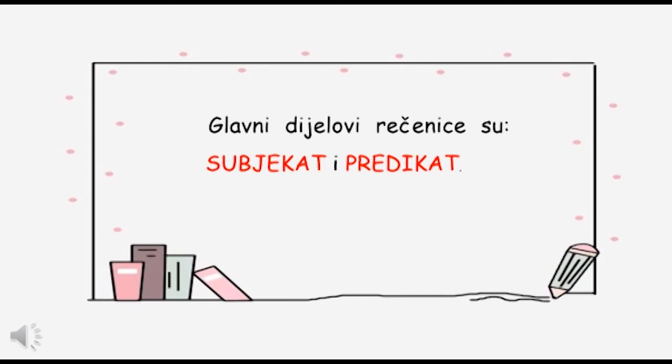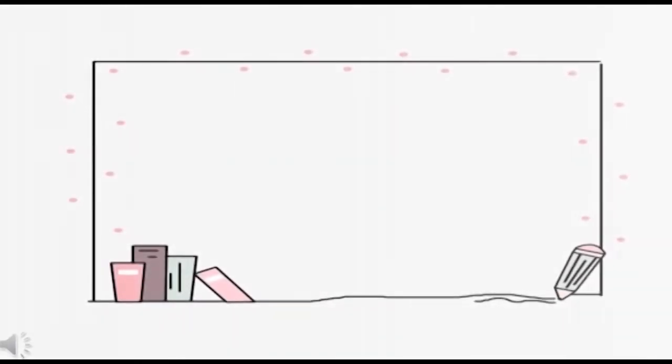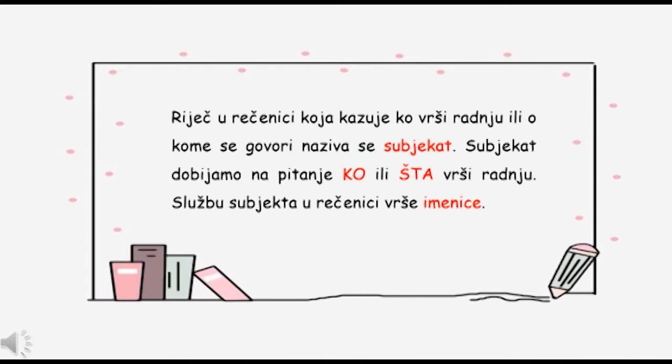Te glavne dijelove rečenice, kao što ste vidjeli u prethodnim primjerima, određujemo pomoću pitanja ko radi i šta radi. Riječ u rečenici koja kazuje ko vrši radnju ili o kome se govori naziva se subjekat. Subjekat dobijemo na pitanje ko ili šta vrši radnju. Službu subjekta u rečenici vrše imenice.